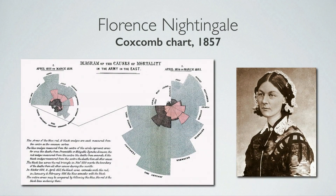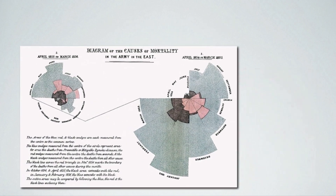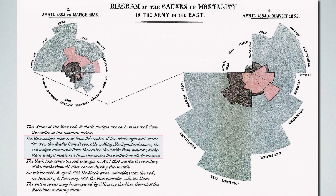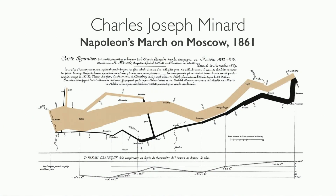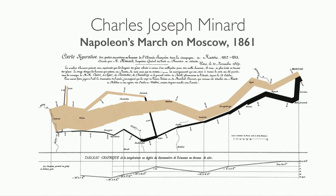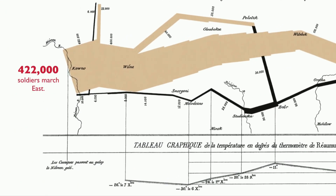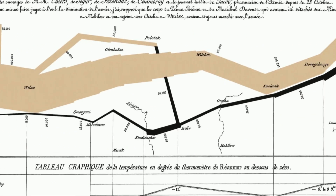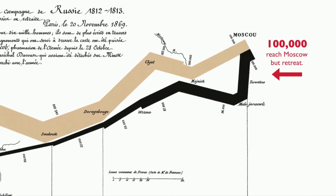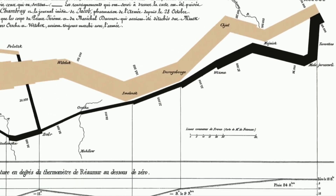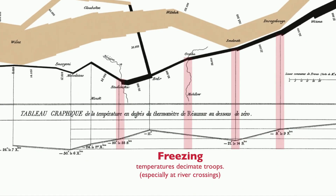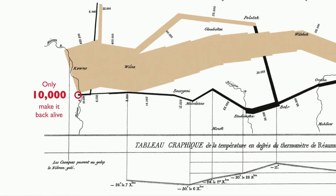Florence Nightingale invented the coxcomb in 1857 for a presentation to Queen Victoria on troop mortality. Highlighted in blue, she showed how most troops' deaths could have been prevented. Shortly after, Charles Menard charted Napoleon's march on Moscow, illustrating how an army of 422,000 dwindled to just 10,000 as battles, geography and freezing temperatures took their toll. He combined a Sankey diagram with cartography and a line chart for temperature.